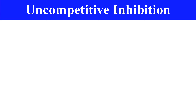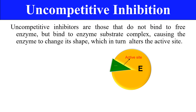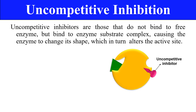The next type is uncompetitive inhibition. These inhibitors do not bind to the free enzyme molecule; instead they bind to the enzyme-substrate complex and then change the enzyme's shape, which in turn alters the active site. First, the substrate binds to the enzyme forming an enzyme-substrate complex. Then the uncompetitive inhibitor binds to this enzyme-substrate complex, ultimately changing the enzyme's shape so it can no longer perform its function. In this way, uncompetitive inhibitors also affect enzyme activity.